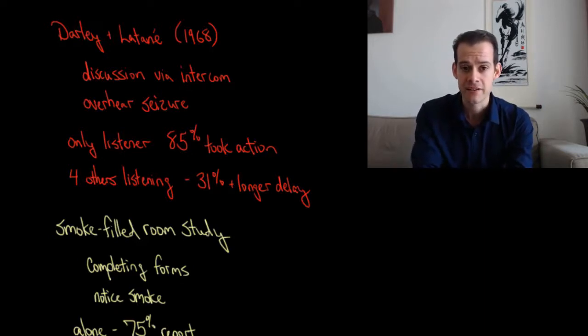Now if the participants were led to believe that they were the only one who could hear this other person, then 85% of them immediately took action. They left the room, they went to find out where is this person who's having a seizure and what can be done to help him. If they thought other people could also hear the seizure, however, that they thought that four others were listening through their intercoms, then only 31% of the participants actually went to get help and they waited longer before doing so.